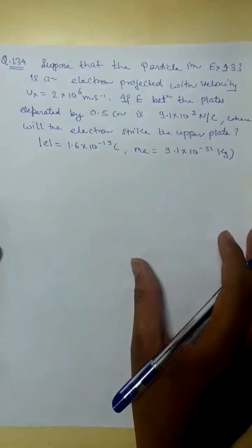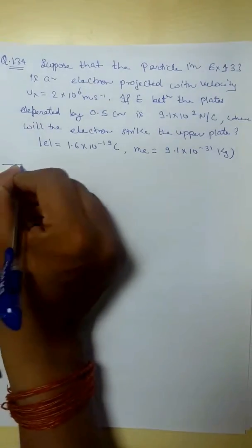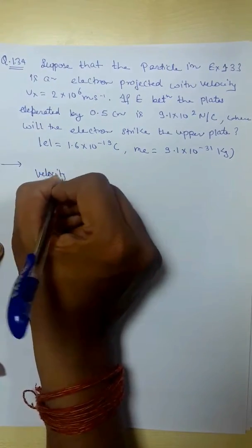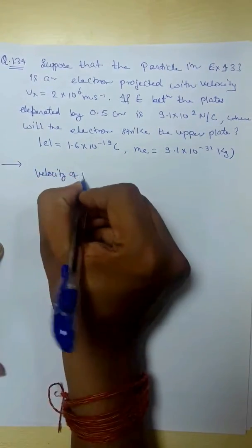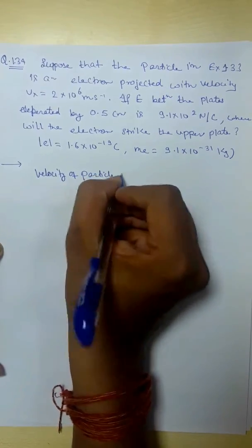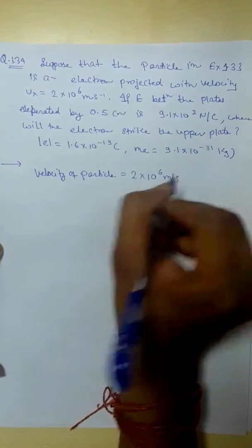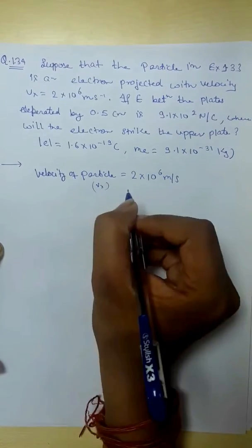So, let's see. First of all, write the given things. The given is velocity of particle. Velocity of particle is 2 into 10 to 6 meter per second. Let's represent Vx.